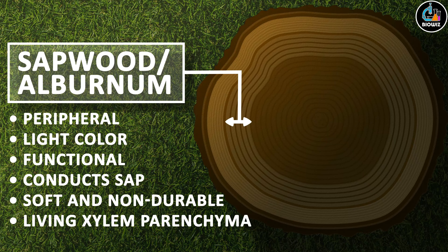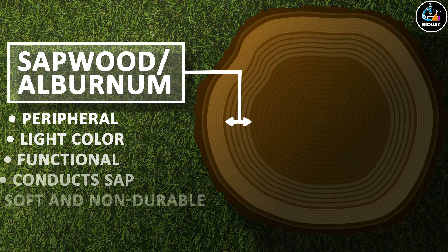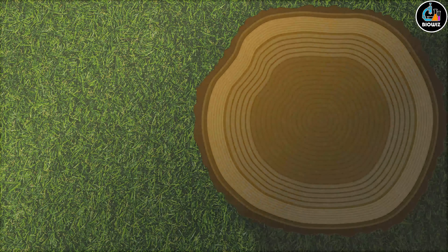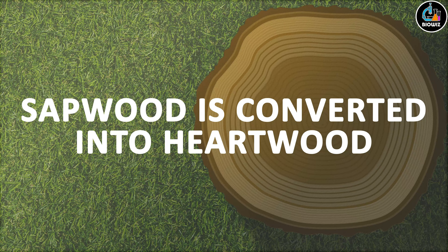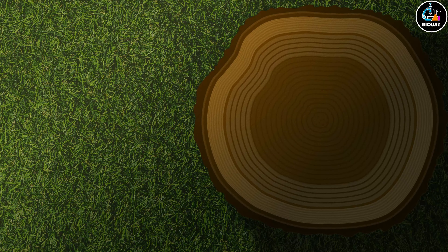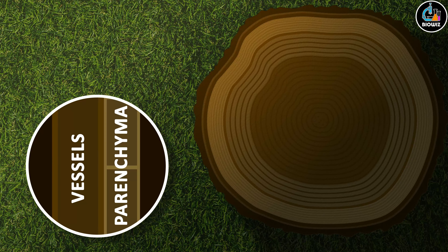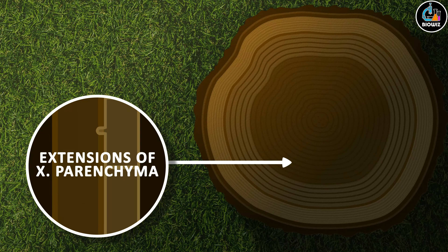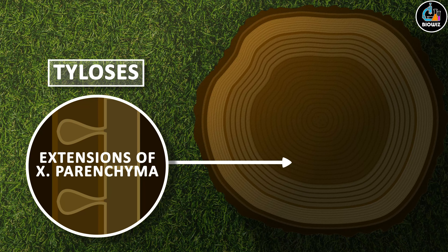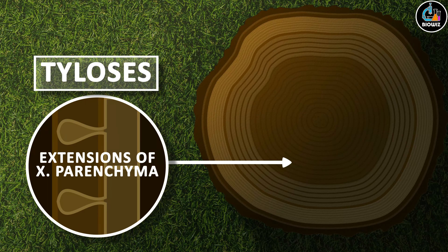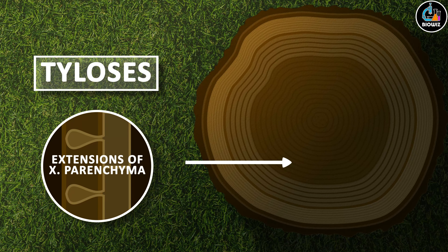The sapwood is relatively soft and not very durable due to the presence of living cells of xylem parenchyma. As more wood is formed, the existing sapwood is converted into heartwood. This conversion occurs by the extension of xylem parenchyma into the lumen of the vessels. As a result, the lumen gets blocked and becomes non-functional. These blocking structures are called tyloses or tracheal plugs.